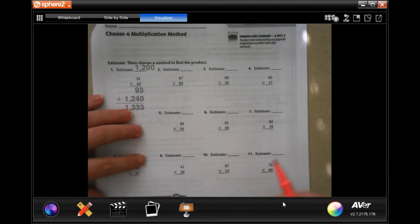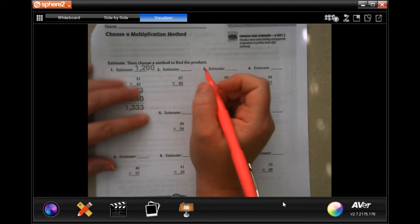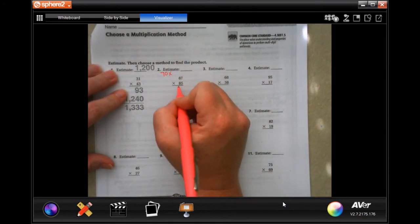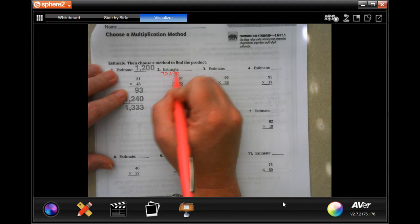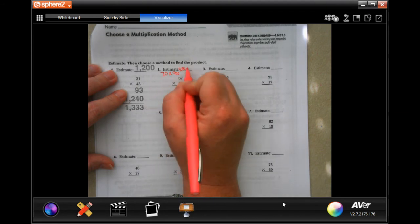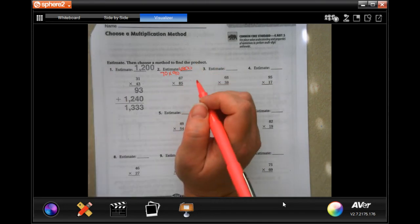So first it wants us to estimate. Well, estimating is the easy part. 67 is going to round to 70, and 85 is going to round to 90. Well, nine times seven is 63, and then we just have to add in our two zeros. That's our estimate.